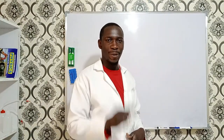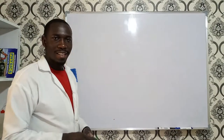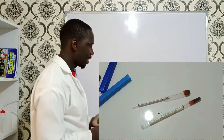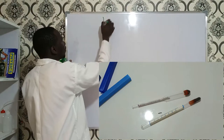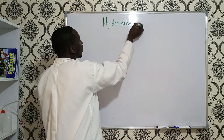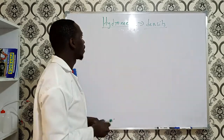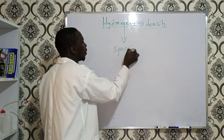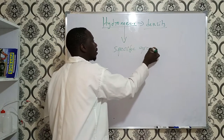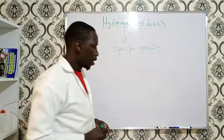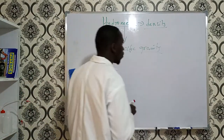Hello, welcome back. I hope you're doing well. Today I want to discuss the hydrometer. A hydrometer is used to measure the specific gravity of a liquid. Specific gravity is also known as the relative density of a given substance.